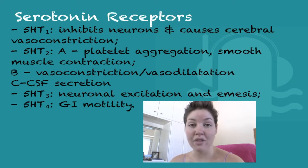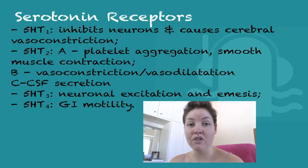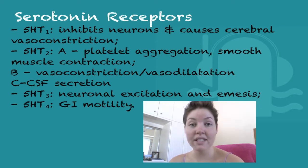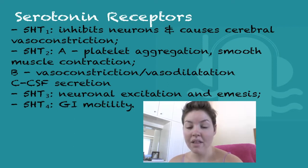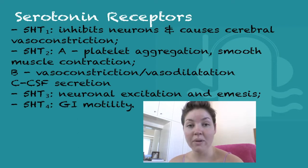5-HT receptor 3 is a non-ligand-gated ion channel. It causes neuronal excitation and emesis. It's found on the sensory nerve endings and can cause Parkinsonian sensation and vomiting. This occurs if the GI mucosa is irritated. In the area postrema, which is known as the chemosensitive trigger zone, this is where the emesis comes from.